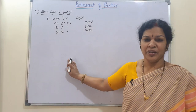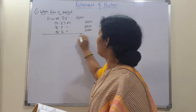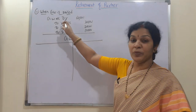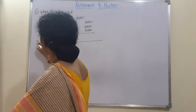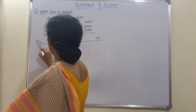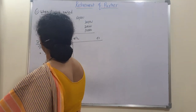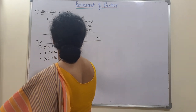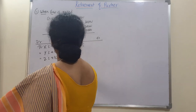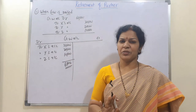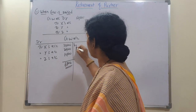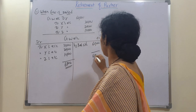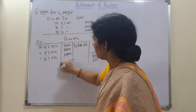When goodwill is raised, only one entry is needed. Now in the goodwill account, the debit side shows: to X's Account 30,000, to Y's Account 20,000, to Z's Account 10,000 — total 60,000. Since goodwill is raised and kept in the business, there is no credit side entry, so we write balance carried down. This amount will be shown in the balance sheet as an asset.